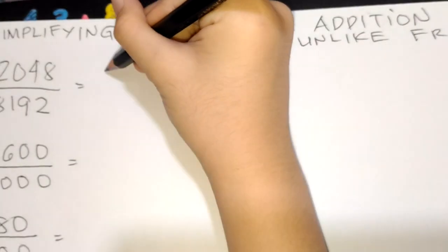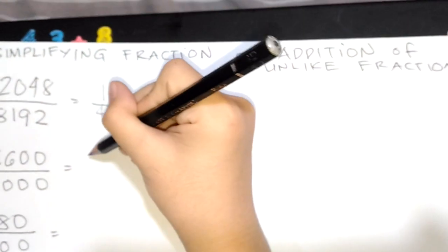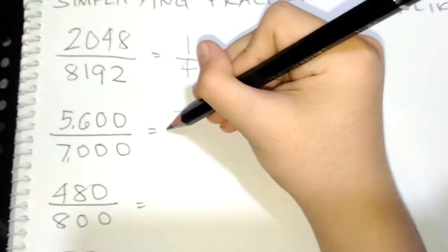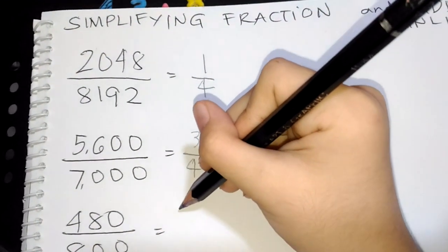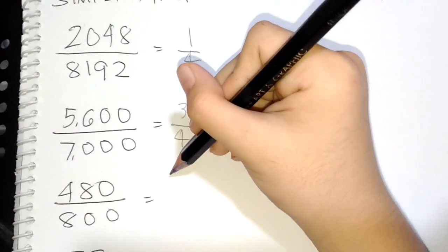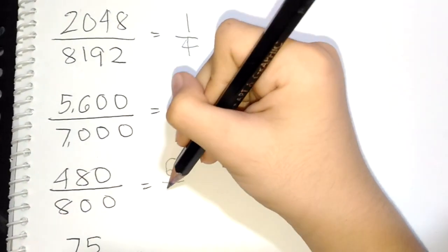Now, this is 1 over 4, okay? This is 3 over 4. Oh yeah, and this is... This one in the simplest term is...